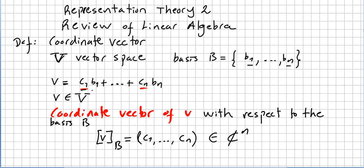We call c₁, c₂, ..., cₙ the coordinate vector of v with respect to the basis B, and we write it as [v]_B = (c₁, ..., cₙ) ∈ ℂⁿ. So v is written with the basis B and these coefficients c₁, c₂, ..., cₙ in the complex space to the power of n.